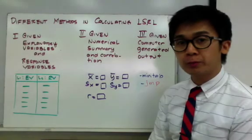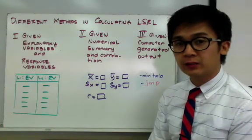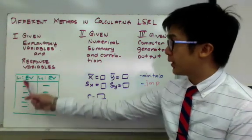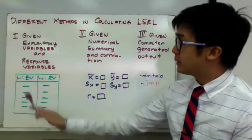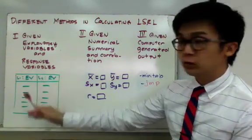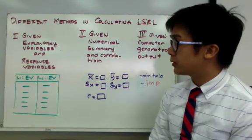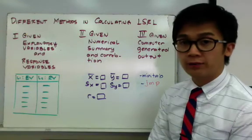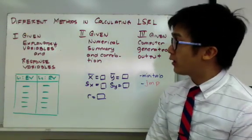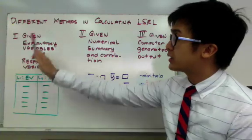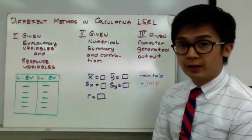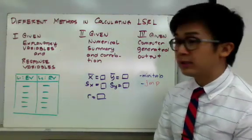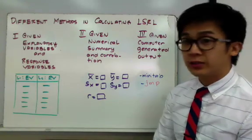From our previous lesson, we've learned how to compute the least squares regression line, or the linear model of our explanatory and response variable given by list 1 and list 2. In this particular situation, we can compute the linear model using our TI-84, producing the value of the slope and the y-intercept. However, not all cases give us this particular type of question, so we have two other ways to compute for the LSRL in two different situations.